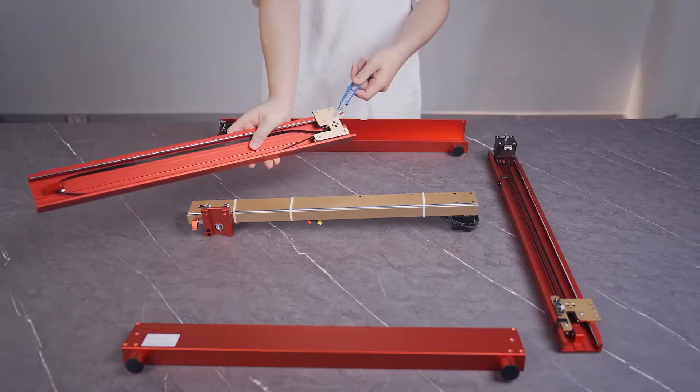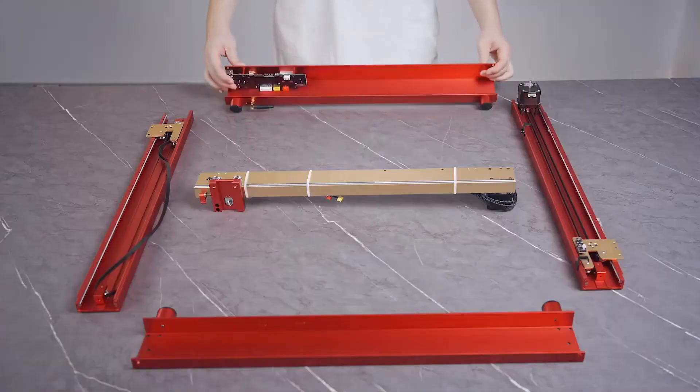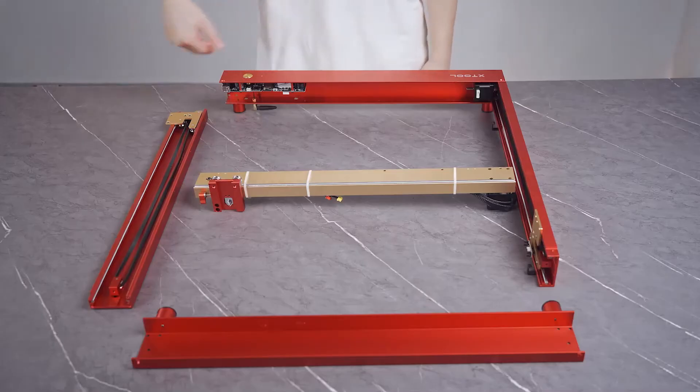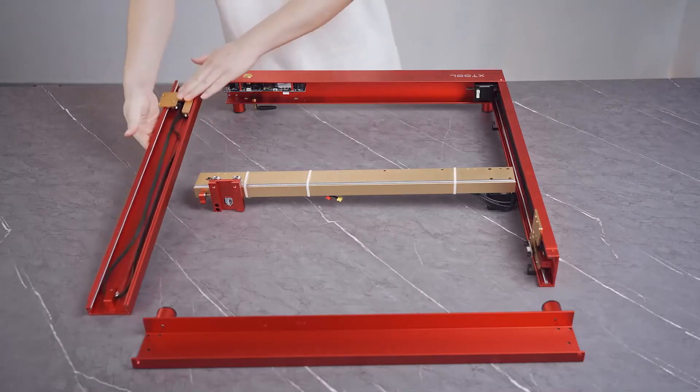Cut off the cable tie on the right plate. Fit the four side plates together. Align the power switch, power port, and USB port with the openings on the right plate.